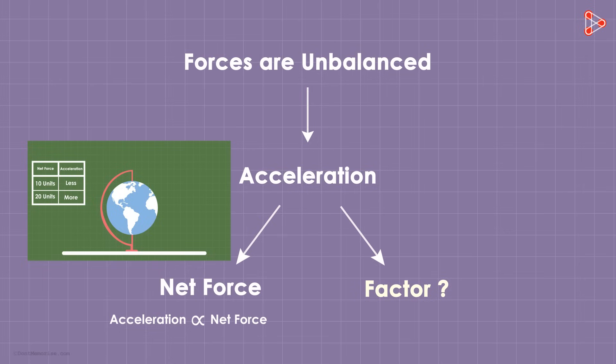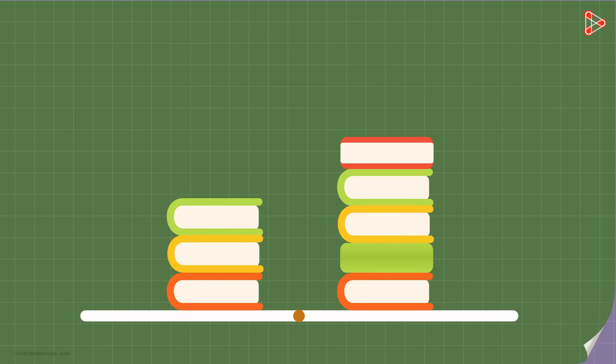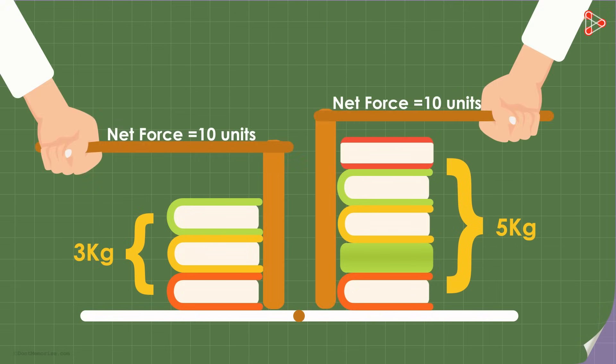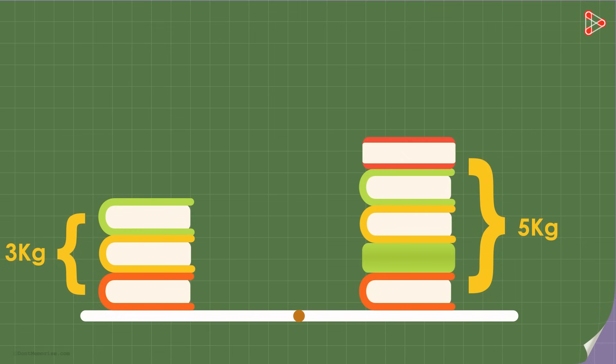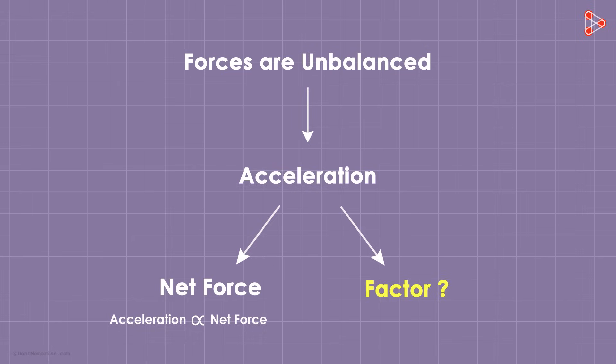Come on, now I want you to think about the second quantity the acceleration will depend on. Let's say there are two objects on the table. One has a mass of 3 kilograms and the other has a mass of 5 kilograms. Now if you apply a net force of 10 units to each of them, which one do you think will accelerate more? Surely it's the 3 kg one because it has lesser mass. Lesser the mass, more the acceleration. And more the mass, lesser the acceleration. Hence we can say that acceleration depends inversely on the object's mass.